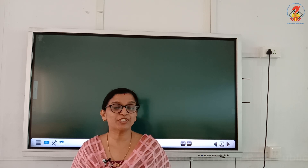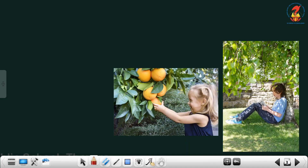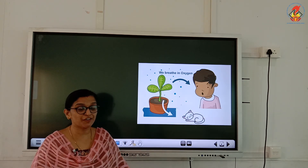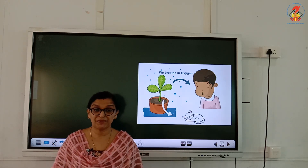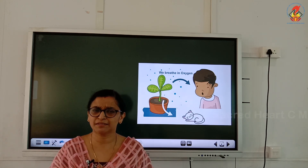Hi children, today we are going to learn and experience the life cycle of an amazing thing. But tell me, why are plants important for our planet? Yes, plants give us fruits, shade, and above all they release oxygen from their leaves, which we humans and animals need to breathe. In short, plants help us to survive on earth.